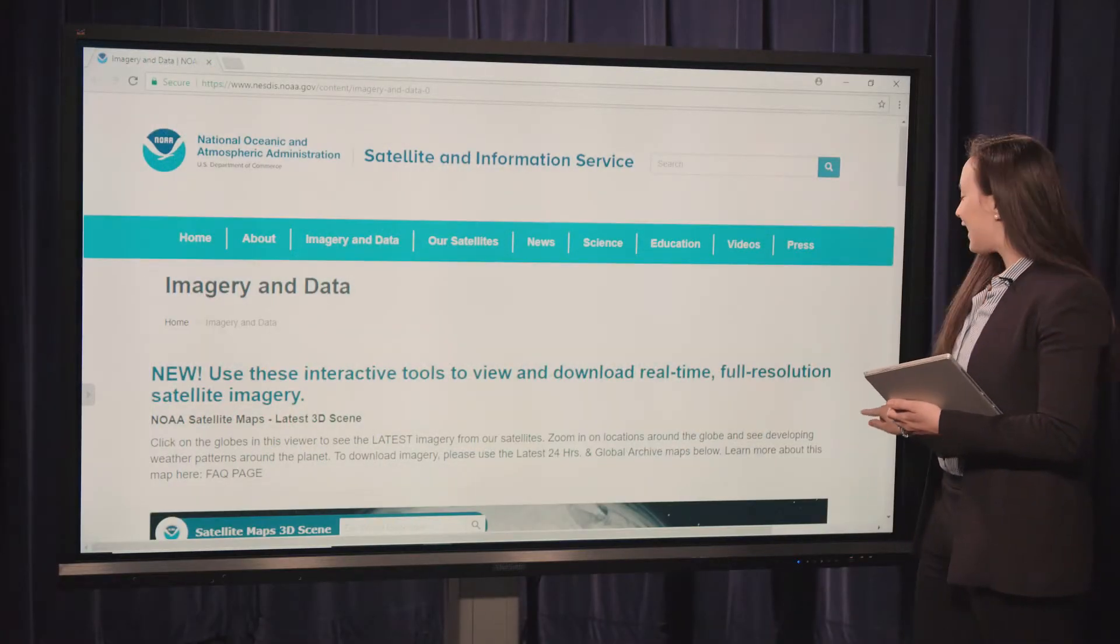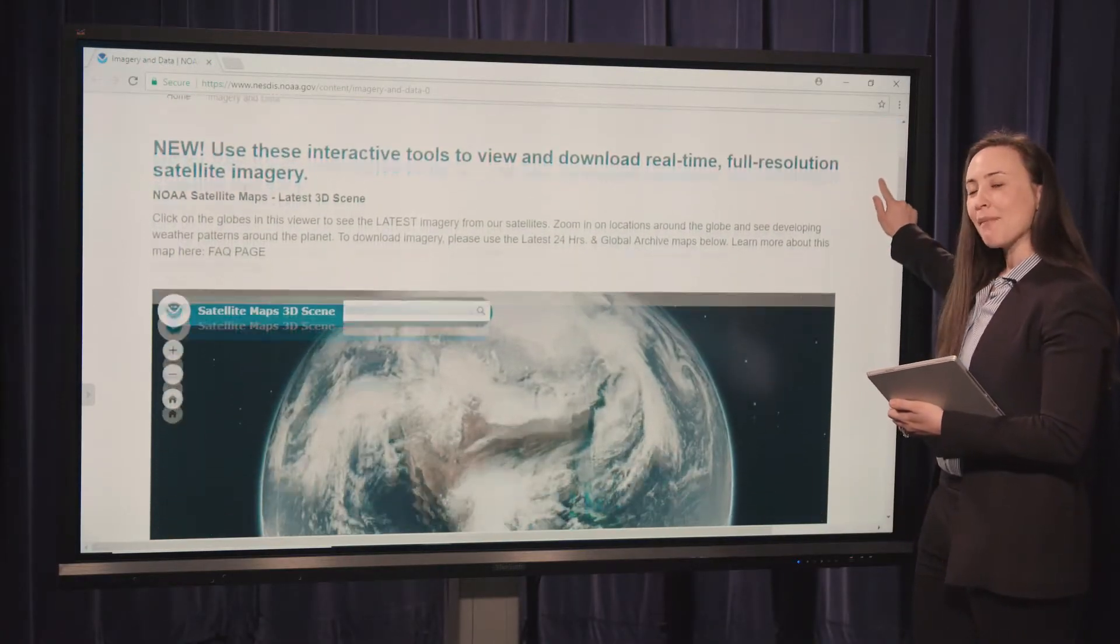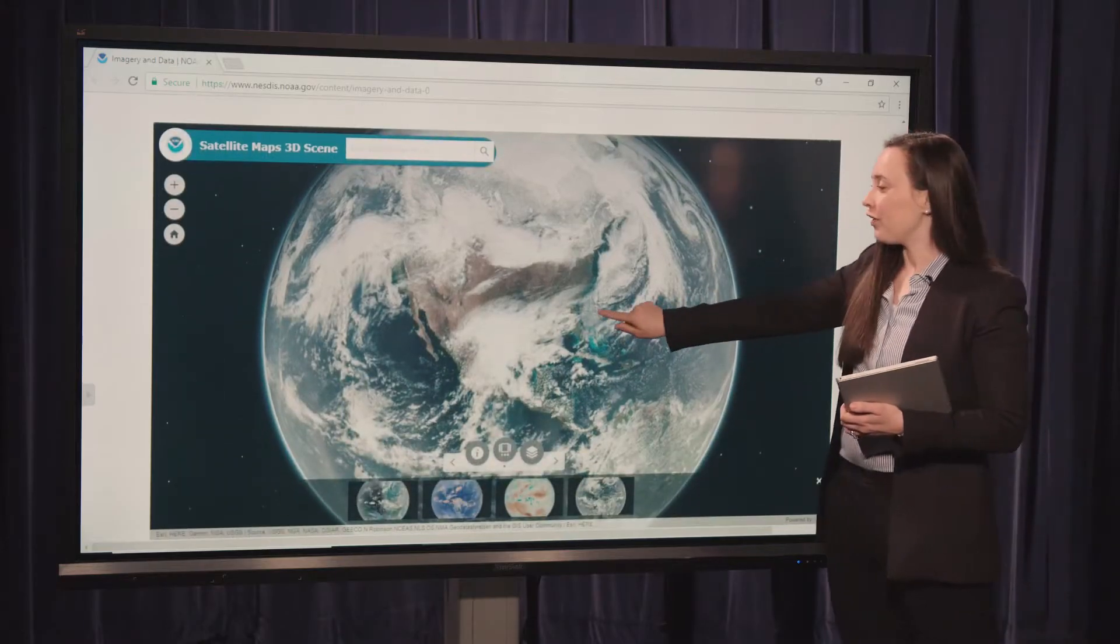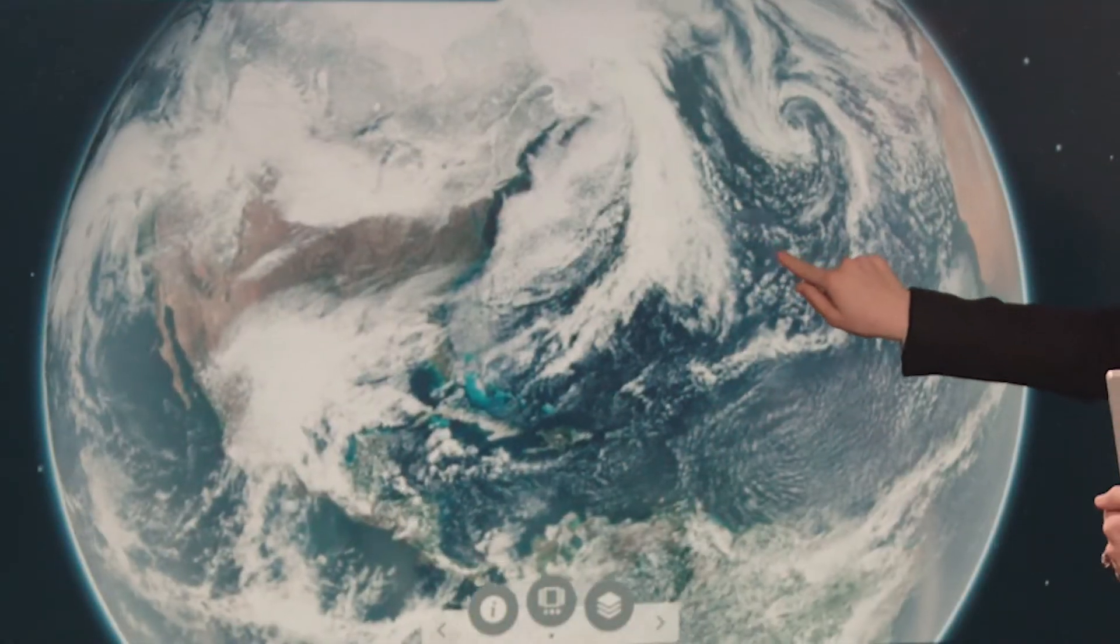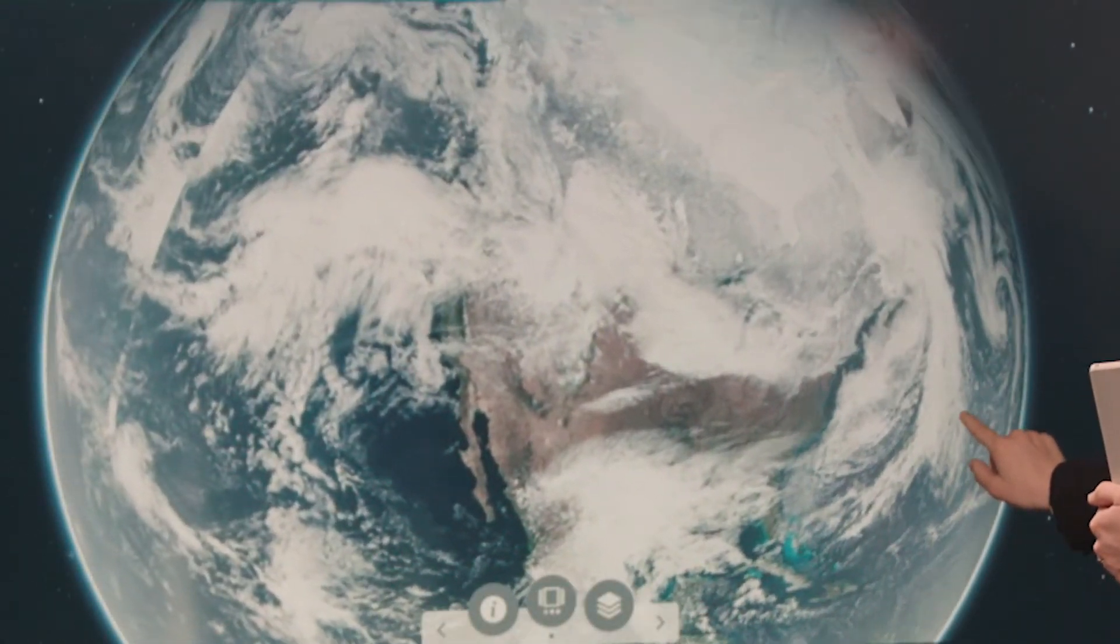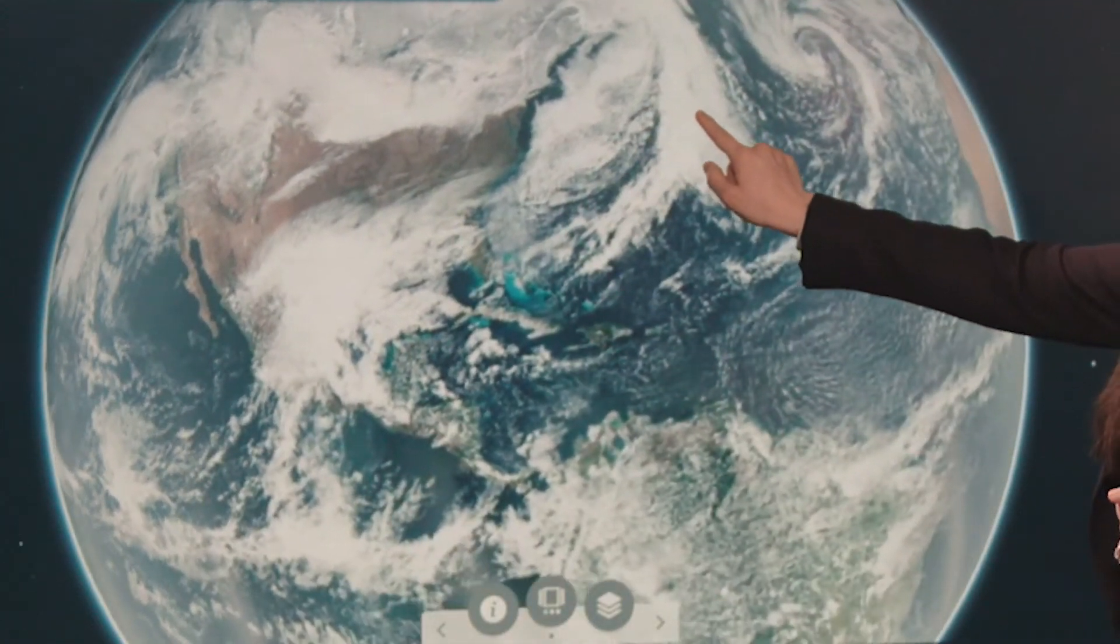On our website, you can use the NOAA Satellite Maps 3D scene to see the latest view of the Earth. The Western Hemisphere is updated every 15 minutes, and the Global View is updated daily.